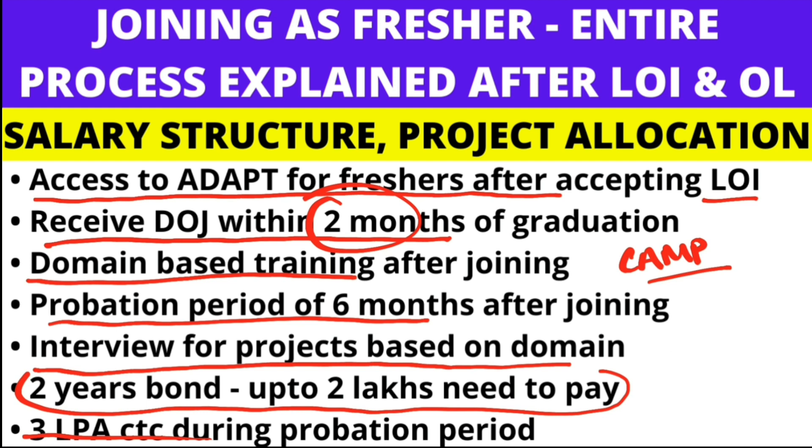Your probation period is six months. After completion of domain-based training, you will have interviews for projects — I'll make another video sharing what questions are asked in the interview and how to prepare, as well as who to contact to get projects faster. During the probation period you get a slightly lesser CTC of three LPA, and the bond amount is two lakhs if you leave within the bond period.